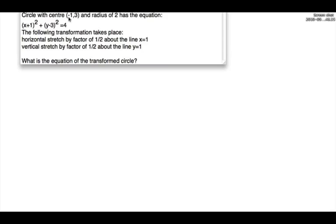They give us the center coordinate, which is negative 1 and 3, with a radius of 2, and they give us the equation of the circle. The important transformation that takes place is a horizontal stretch by a factor of one half about the line x equals 1, and a vertical stretch by a factor of one half about the line y equals 1. The question asks: what is the equation of the transformed circle?